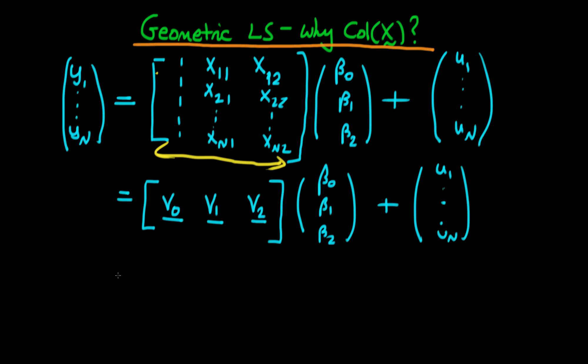Now, if I expand this out, we can just do it as if we're multiplying two vectors. The first component is just going to be V0 times beta naught. The second one, V1 times beta 1, and then V2 times beta 2.